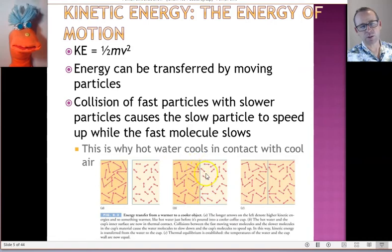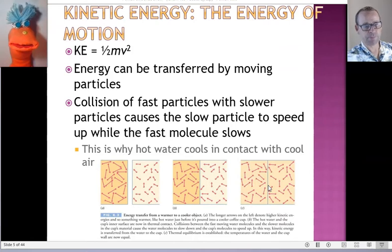When they come in contact, and the actual particles can hit each other, then the faster moving ones, the ones with more energy, will hit the slower moving ones and speed them up. And the result will be what we call an equilibrium. Both of them will have the same energy if they're allowed to interact.